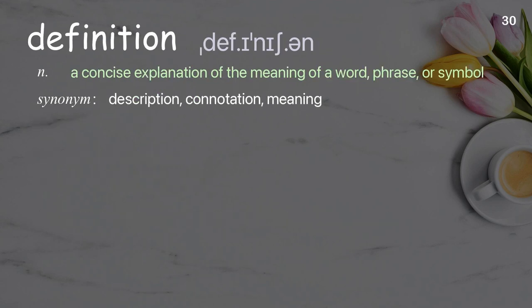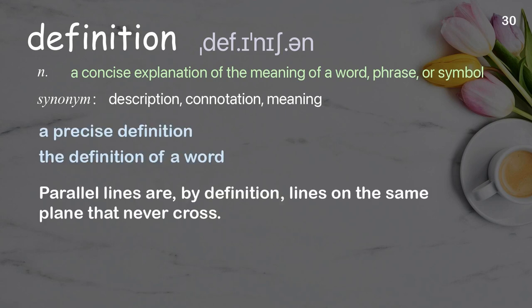Definition: a concise explanation of the meaning of a word, phrase, or symbol. Examples: a precise definition, the definition of a word. Parallel lines are, by definition, lines on the same plane that never cross.